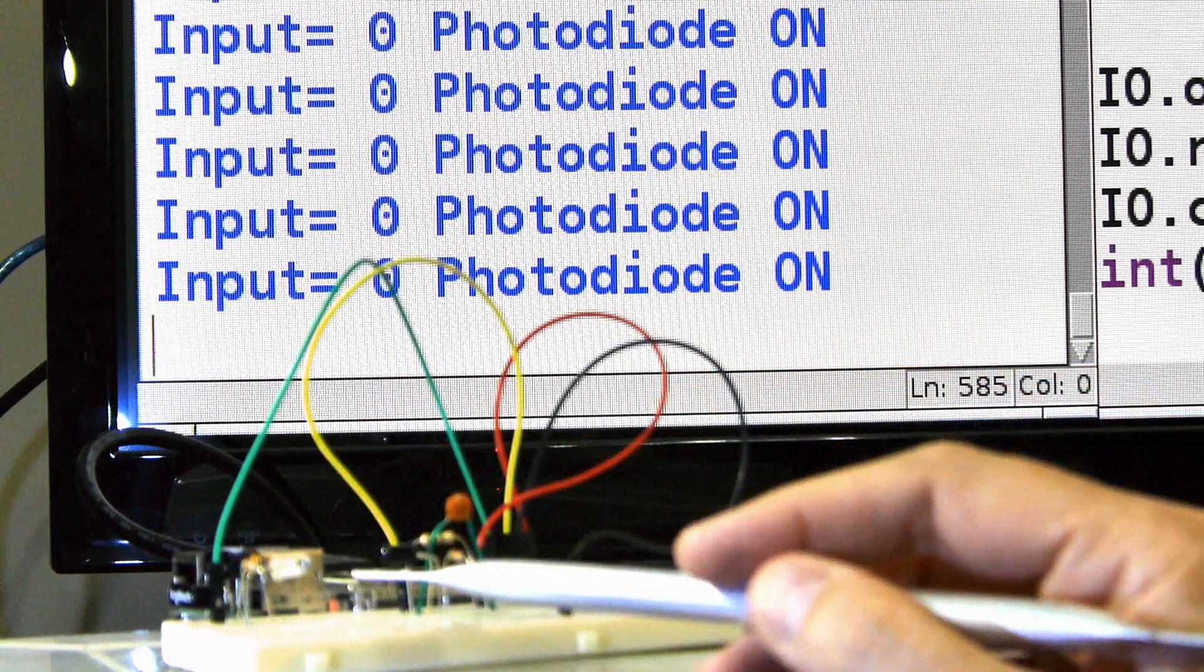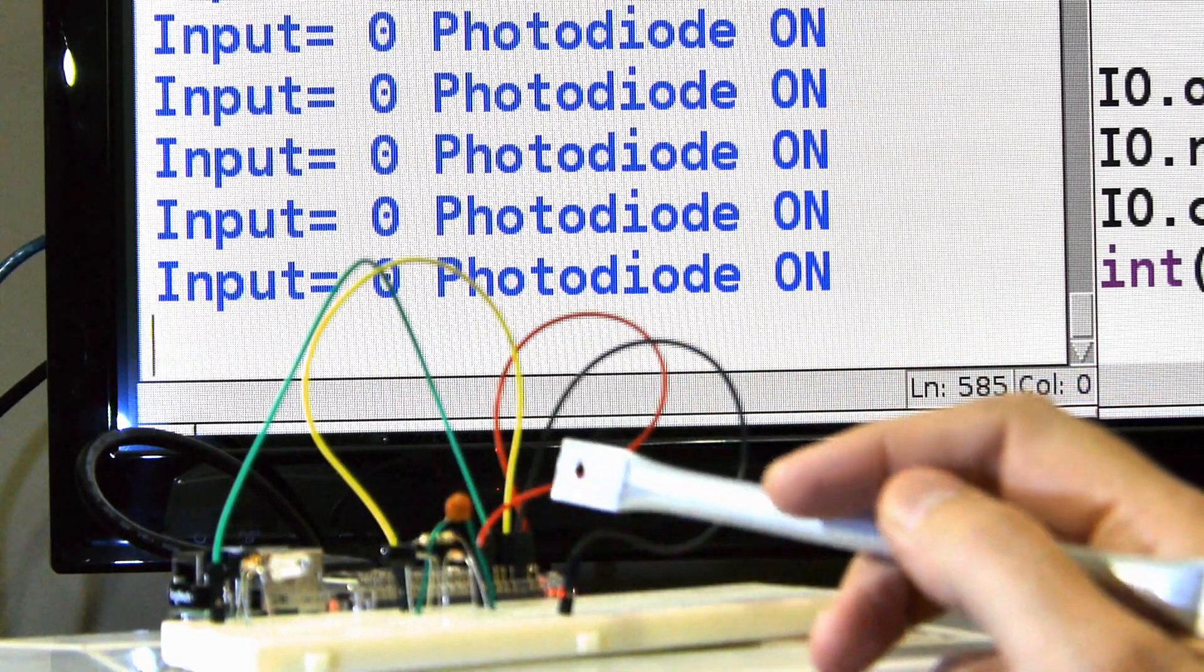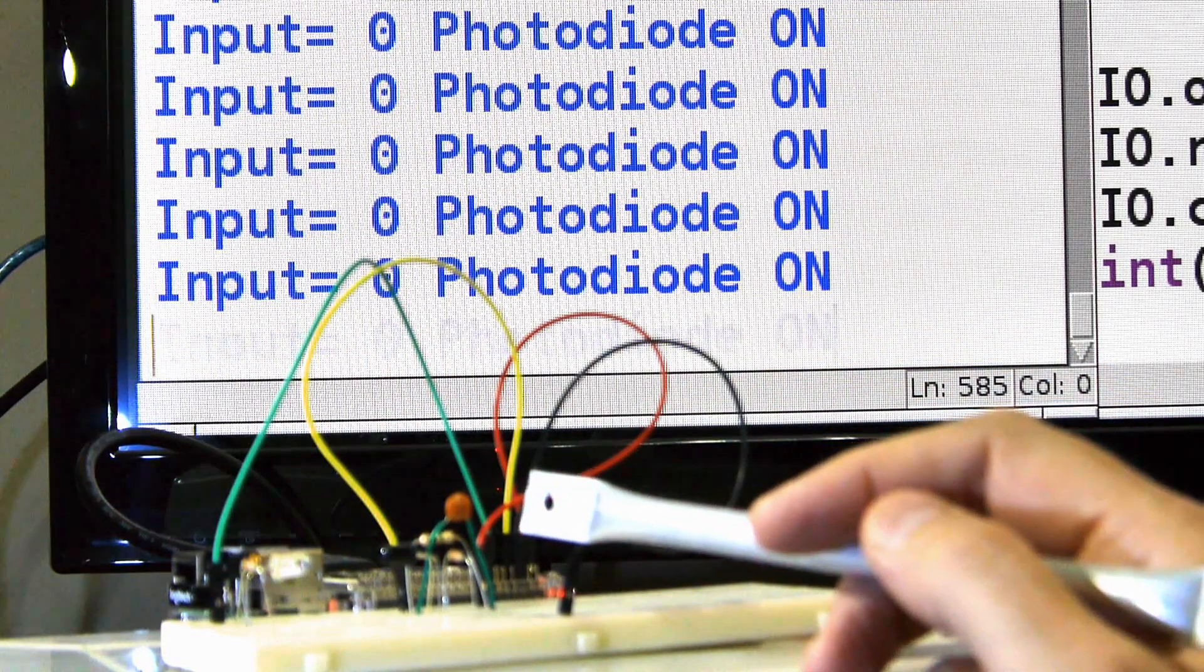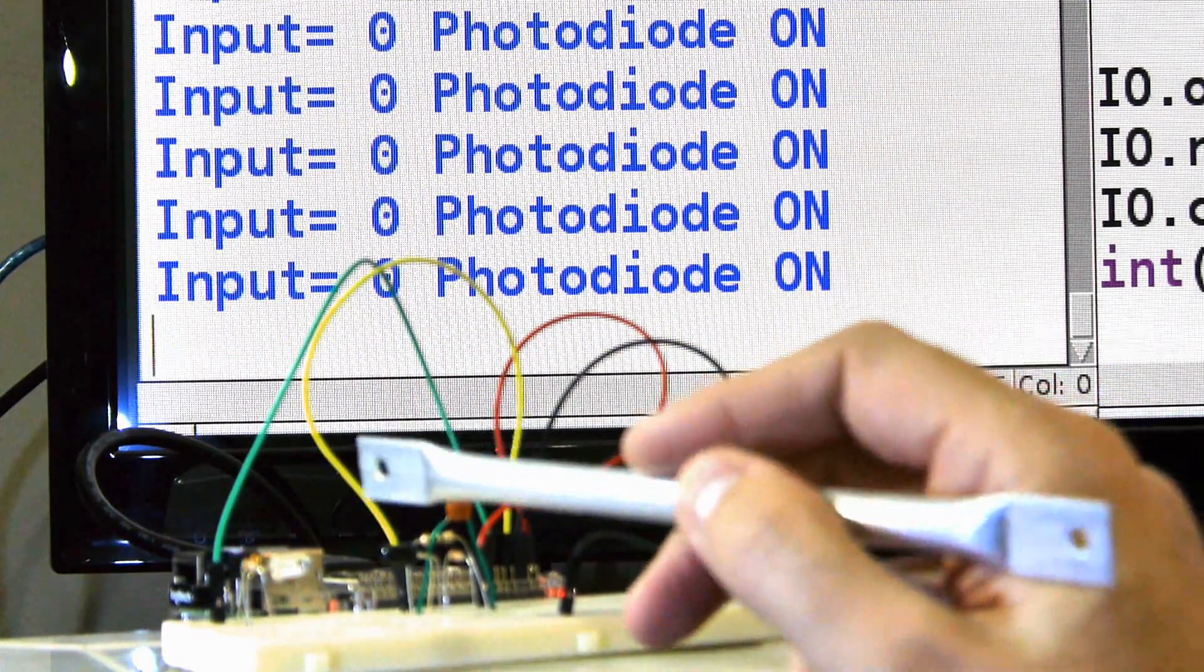And the nice thing about this strategy is the computer, the Pi, is not just sitting back there waiting for pin 7. It's doing other stuff until I interrupt the beam.